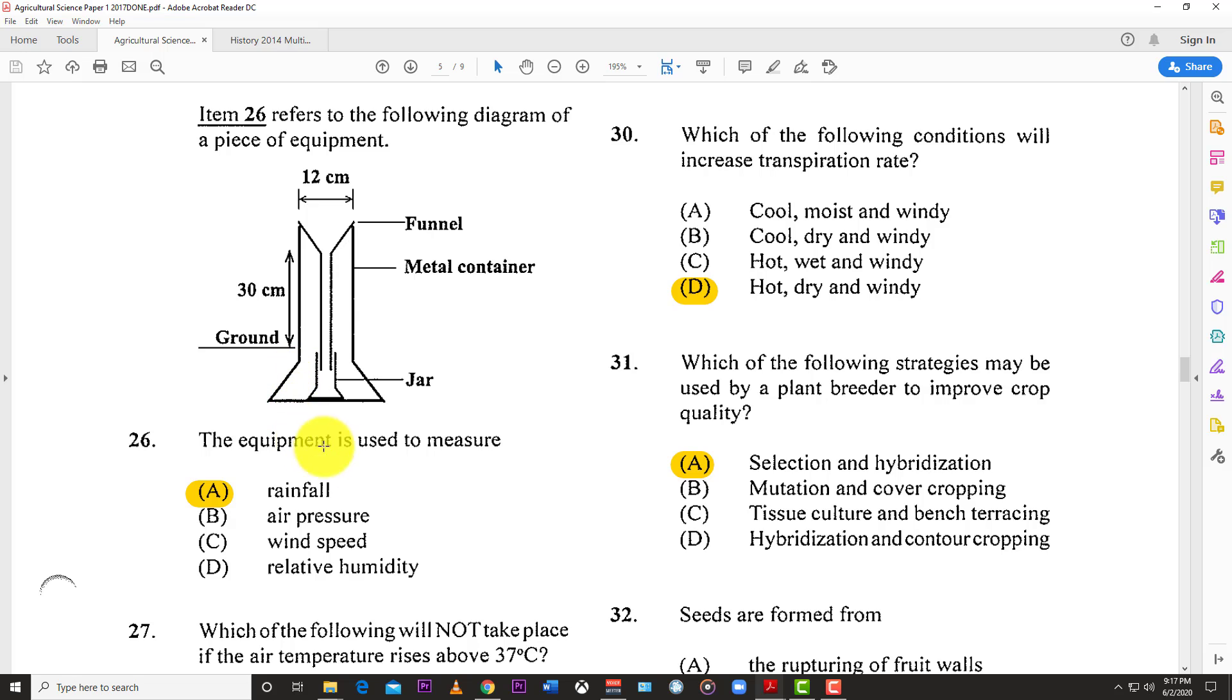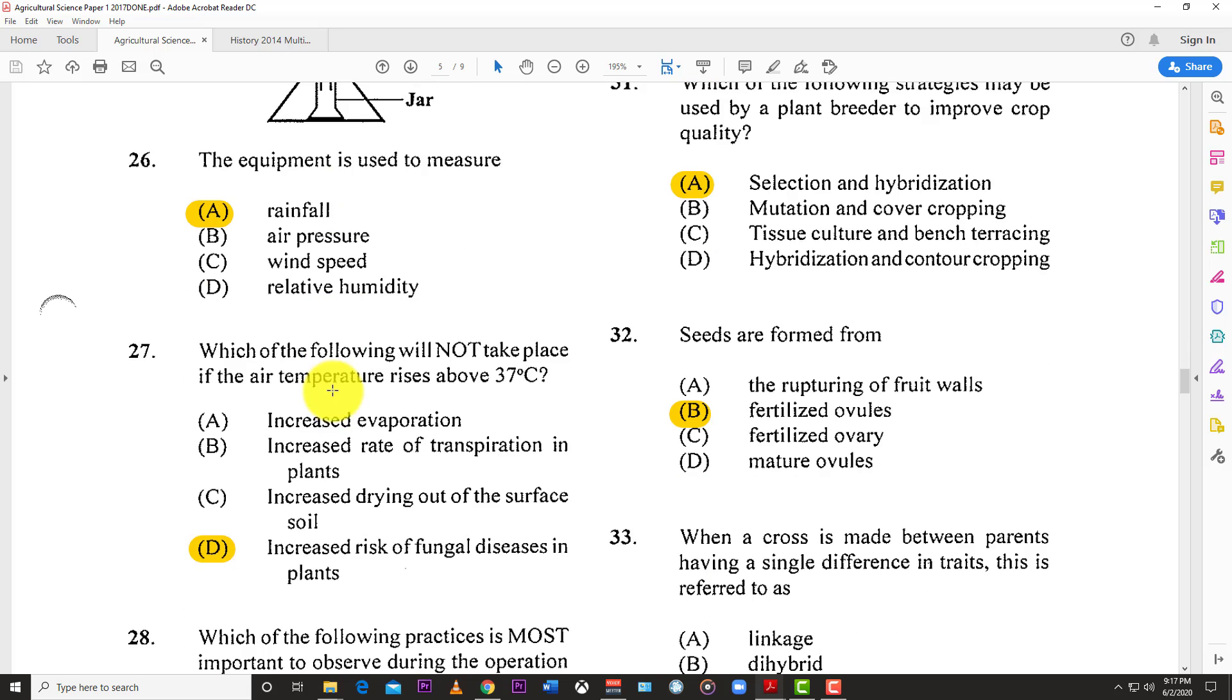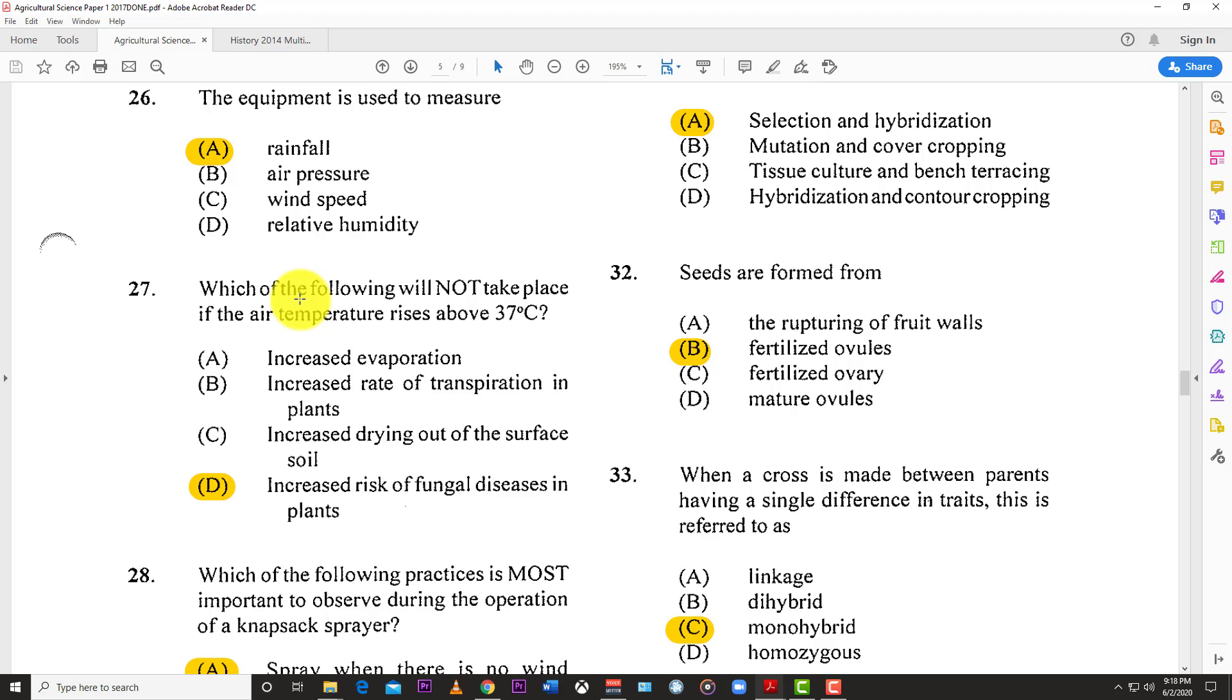Number twenty-six: This diagram shows a piece of equipment. This equipment is used to measure rainfall. It collects here in the funnel and you can measure how much rainfall in inches you have.